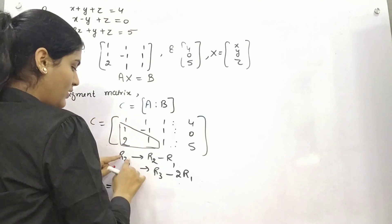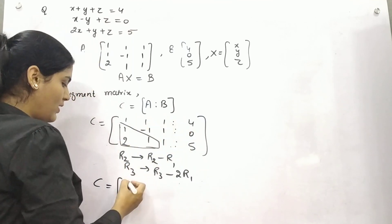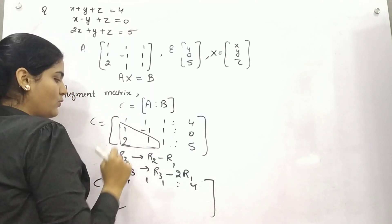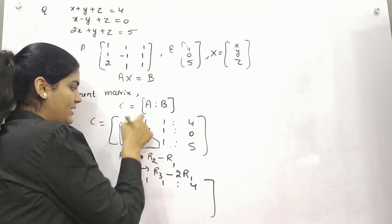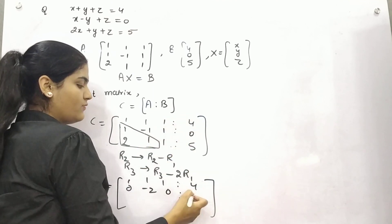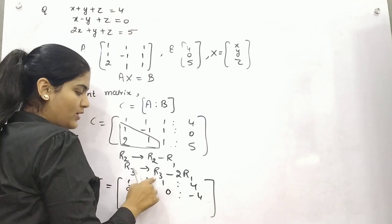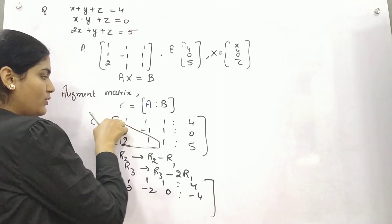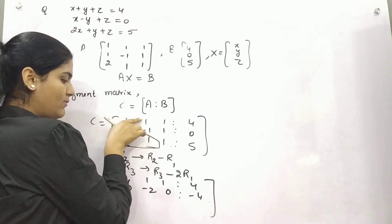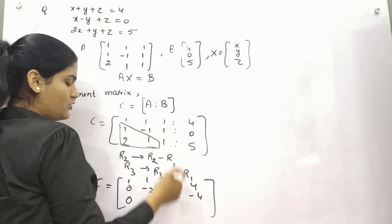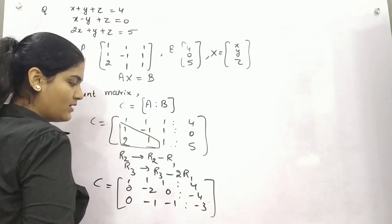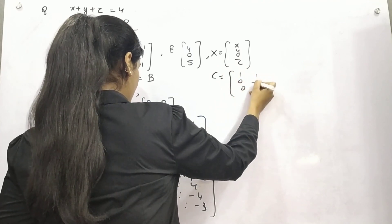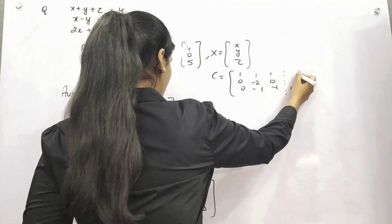For row 2, subtracting row 1 from row 2: 1 minus 1 is 0, minus 1 minus 1 is minus 2, 1 minus 1 is 0, and 0 minus 4 is minus 4. For row 3, subtracting twice of row 1 from row 3: 2 minus 2 is 0, 1 minus 2 is minus 1, 1 minus 2 is minus 1, and 5 minus 8 is minus 3. So the updated matrix elements are: row 1 stays 1, 1, 2 | 4; row 2 becomes 0, minus 2, 0 | minus 4; row 3 becomes 0, minus 1, minus 1 | minus 3.